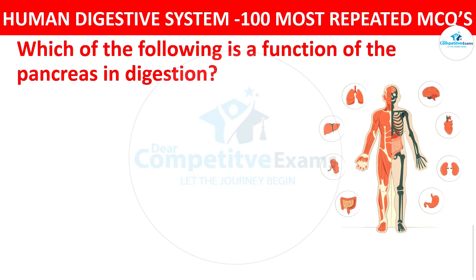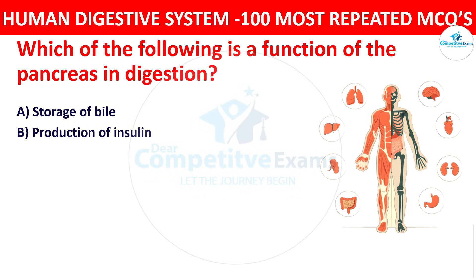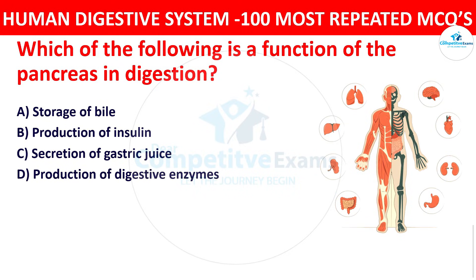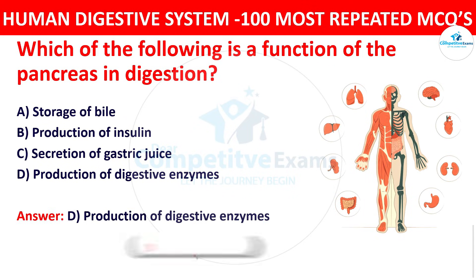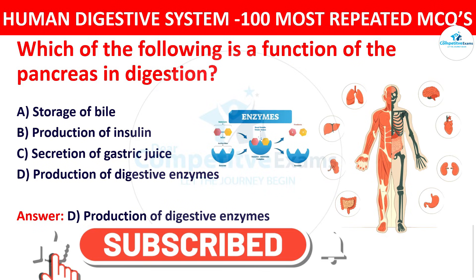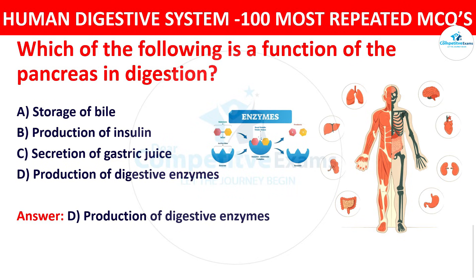Question number fourteen: Which of the following is the function of the pancreas in digestion? The options are storage of bile, production of insulin, secretion of gastric juice, or production of digestive enzymes. The right answer is production of digestive enzymes. The pancreas produces digestive enzymes that are released into the small intestine to further break down food.